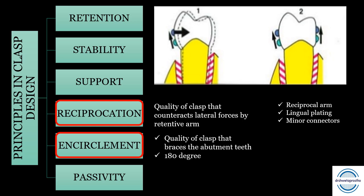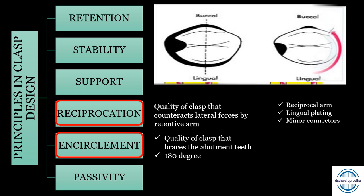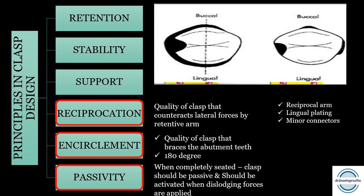Encirclement is mainly provided by the retentive arm and the reciprocal arm. It can be continuous, as in the circumferential clasp assembly, or discontinuous (three-point), as in the bar clasp assembly. Passivity is the property that also prevents adverse forces on the abutment. It states that when the RPD is in the resting position, the clasp will be passive — it will only be activated when dislodging forces are applied.